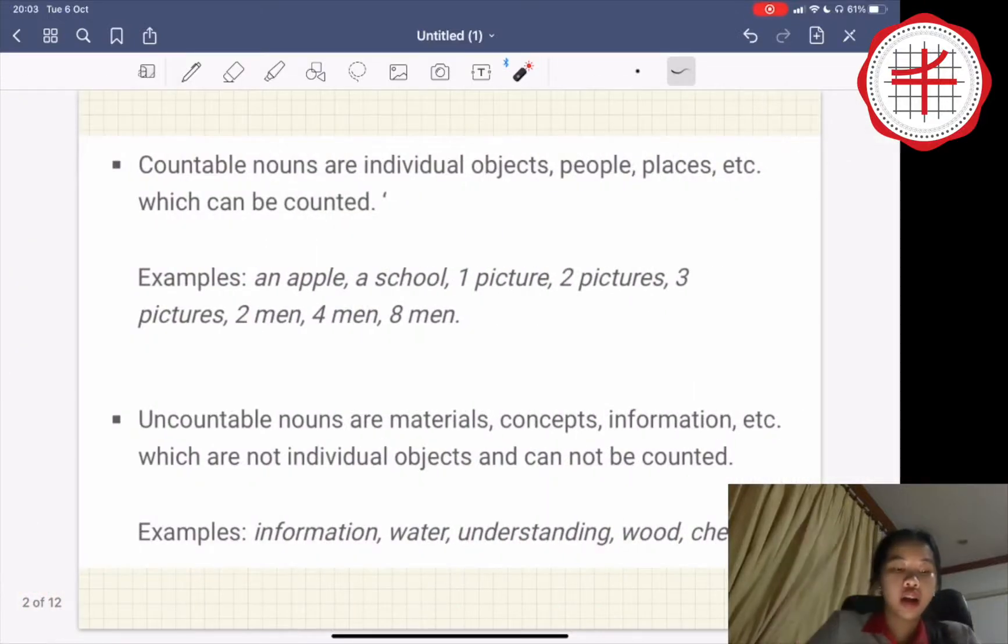Countable nouns are individual objects, people, places, which can be counted like an apple, a school, one picture, two pictures, two men, four women, something like this.